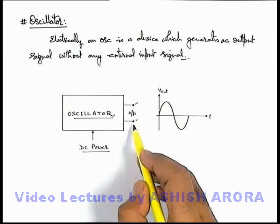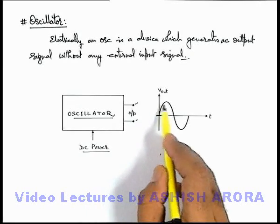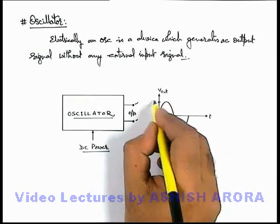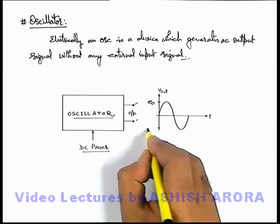Here you can see the voltage across the output terminals of an oscillator varies sinusoidally between the voltage e_not and minus e_not.